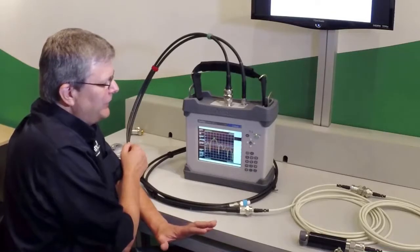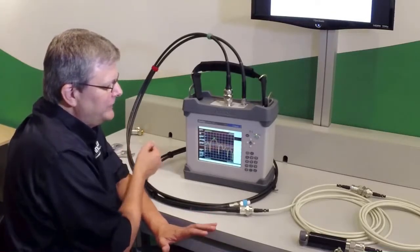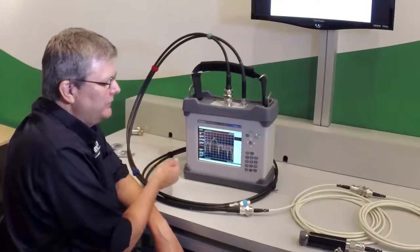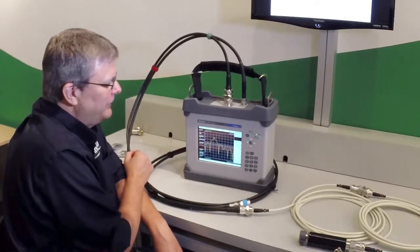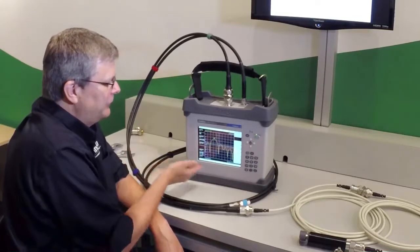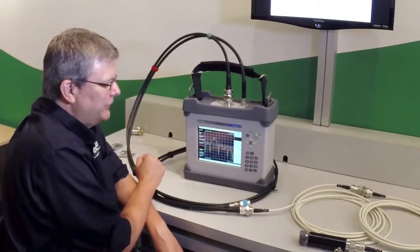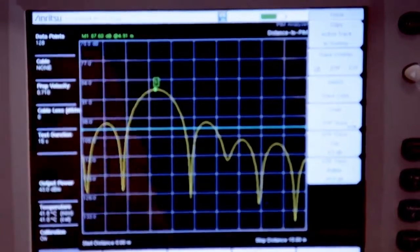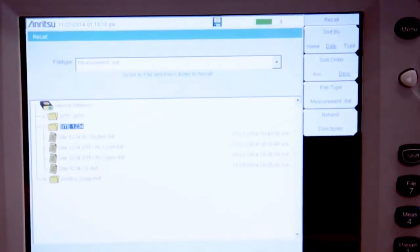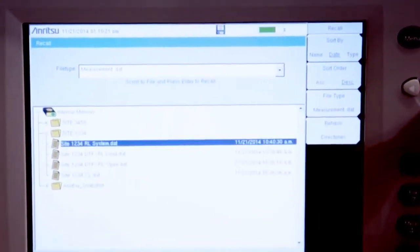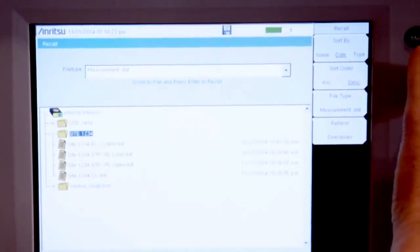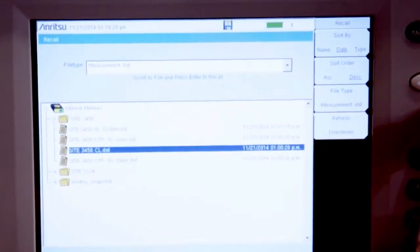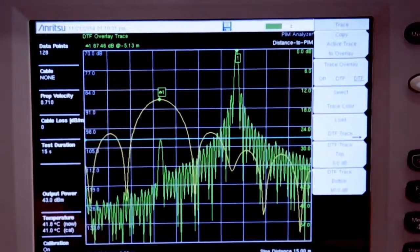A new capability of the B-Series PIM Master is that because we did our cable and antenna analyzer measurements on the same instrument, we can use those DTF measurements we did in cable and antenna analyzer mode to help us gain more information about the location of this PIM problem. So what I'm going to do is I'm going to hit shift trace, load a distance to fault trace, and we're going to go into the site 3456 directory that we were looking at.